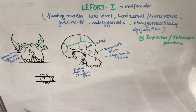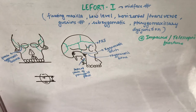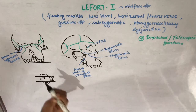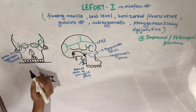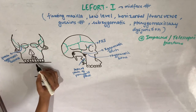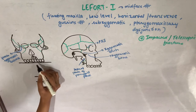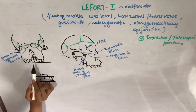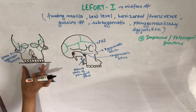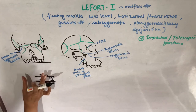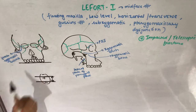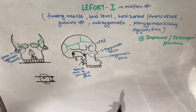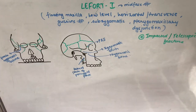There is a type of Le Fort 1 fracture that is usually undiagnosed: the impacted or telescopic fracture. This results from transmission of the blow from the opposing jaw. In the typical Le Fort 1, the maxilla is known as floating maxilla because it separates from the rest of the middle third. However, in the impacted variant, the maxilla is not disimpacted or separated from the superior structures of the mid-face, and hence it is called an impacted or telescopic fracture.